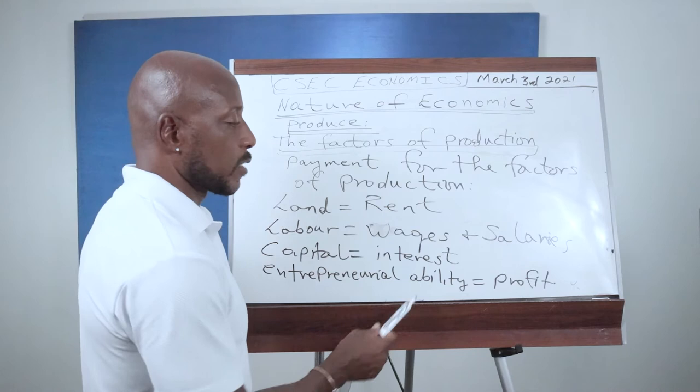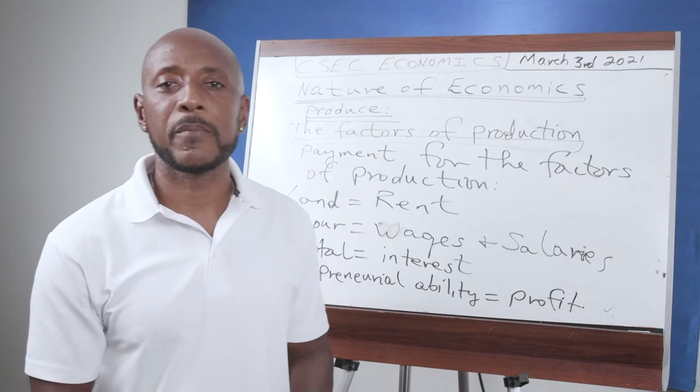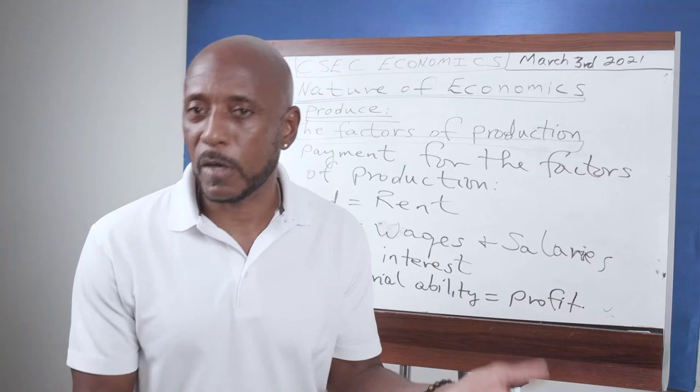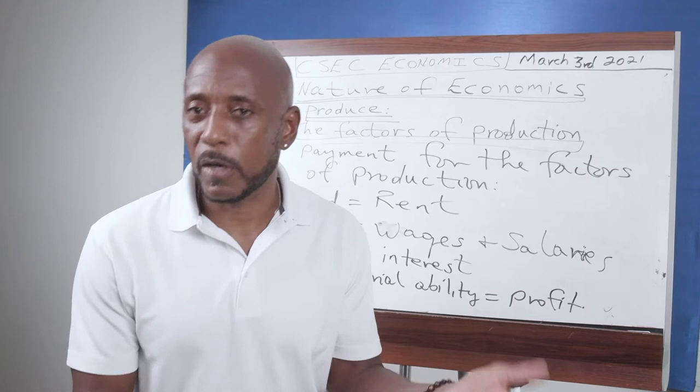You need to know these because they will come up on your CSEC exams. You might see a multiple choice question such as: the payment for capital is A, interest; B, two mangoes; C, a roast breadfruit; D, wages. You just have to know them. Collectively, the rewards for all of the factors of production are referred to as income. Later in the syllabus we'll revisit that and talk about national income and aggregate income.